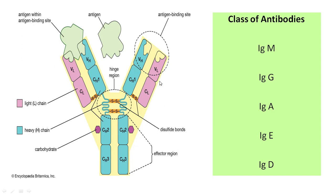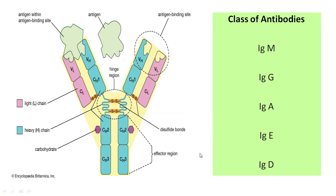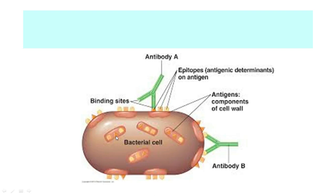The other portion is a constant region, constant for a given class of antibody. For example, IgM has a mu heavy chain — different IgM antibodies have different FAB structures, but all IgM antibodies share a common Fc portion, called the fraction constant. Similarly, each IgG has a different antigen-binding site but a common Fc portion among all IgGs. Importantly, the Fc portion of IgG is different from the Fc portion of IgM, but all IgM share a similar Fc portion and all IgG share a similar Fc portion.